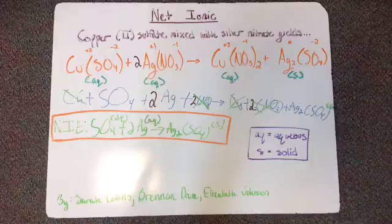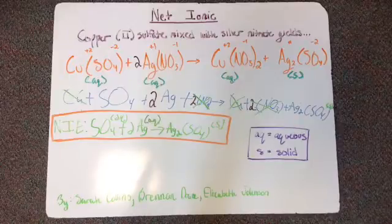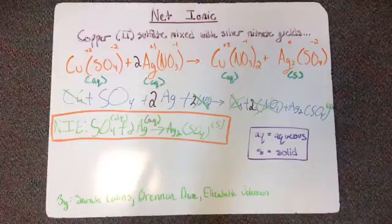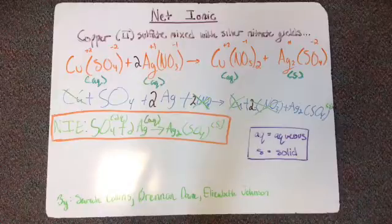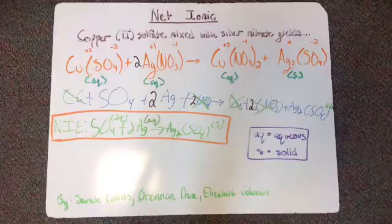Right now, we're using the equation of copper sulfate mixed with silver nitrate. So Cu, which has a positive 2 charge, and SO4, which has a negative 2 charge as sulfate.